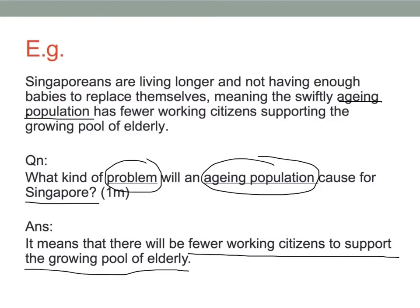I copied it word for word, and I really made sure that it was in a complete sentence so that the examiner will not misunderstand me. You should have the habit of checking to see whether you copied down everything correctly. Because if you just miss out one keyword — like the word 'working' here — the examiner might not give you the mark. What kind of citizens are we talking about? Working citizens, not any other kind. Babies could be citizens, but are they supporting the growing pool of elderly? No. It has to be working citizens.